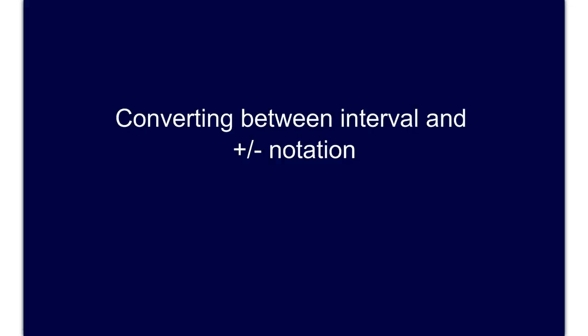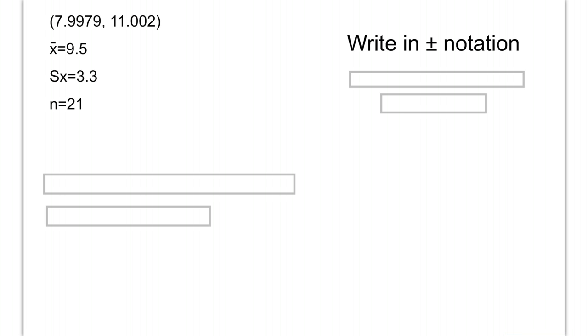Let's look at how to convert between interval and plus-minus notation when we're dealing with confidence intervals. A lot of times we're going to see the interval notation because that's how our calculator outputs it. So you might see something like this: open parenthesis, 7.9979, comma, and then another number, 11.002.